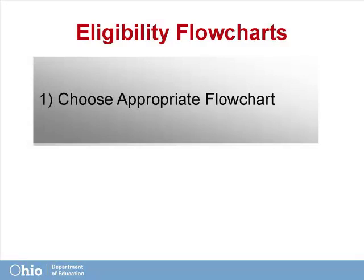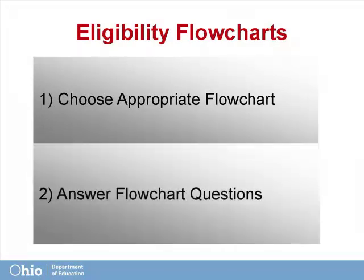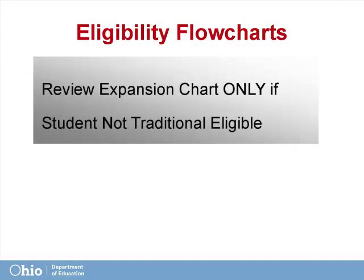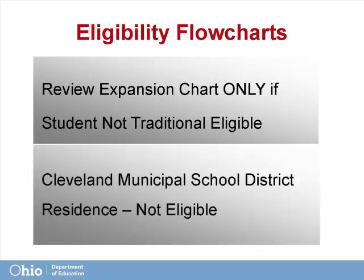We will need to choose the correct flowchart based on the student's current situation. It is important to understand that determining eligibility for the EdChoice scholarship is based on correctly answering the series of sequential questions within the charts. It may be necessary to contact the public school district to ascertain some student information. Note, the EdChoice Expansion chart should only be referenced after we have determined that the student is not traditional EdChoice eligible.